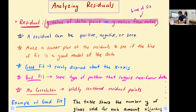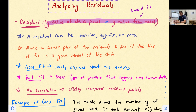Once we make our scatterplot of the residuals, if the points are evenly dispersed about the x-axis — some below, some above, some on the x-axis — then we say it's a good fit. A bad fit would show some type of pattern suggesting non-linear data, like points in a U-shape or V-shape. No correlation would just be wildly scattered residual points all over the graph.